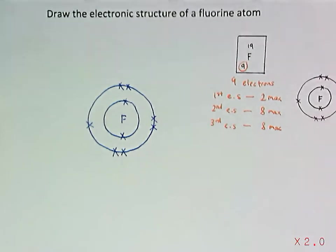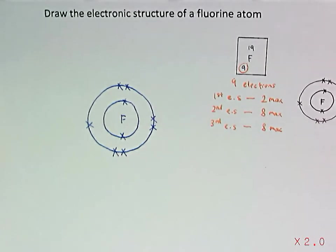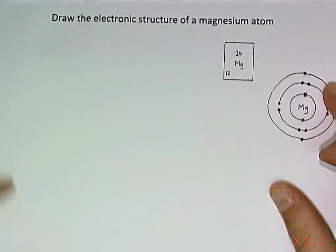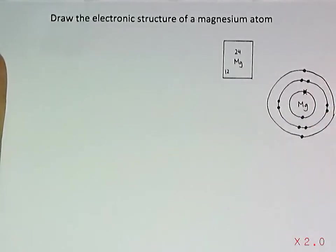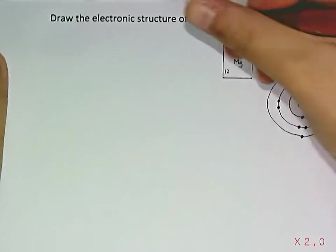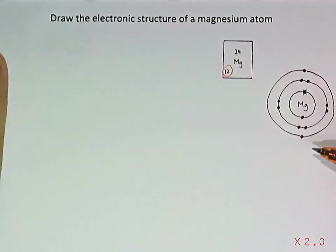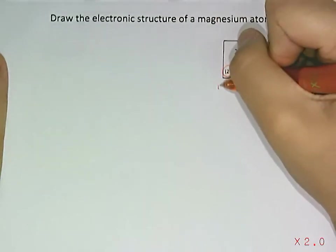Next, we're going to look at how to draw the electronic structure of a magnesium atom. For the magnesium atom, it has a proton number of 12, which means that it has 12 electrons.